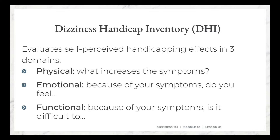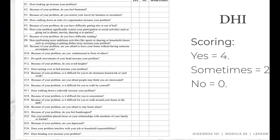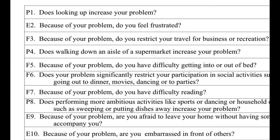The Dizziness Handicap Inventory evaluates how dizziness is affecting people in three domains: physically — what increases the symptoms; emotionally — because of symptoms, do you feel a particular way; and functionally — because of your symptoms, is it difficult to do a particular activity? Looking at the form, on the left-hand side there are numbers one to 25 — so there are 25 questions — and right before each number there are three letters: P, E, or F. P stands for physical, E stands for emotional, and F stands for functional.